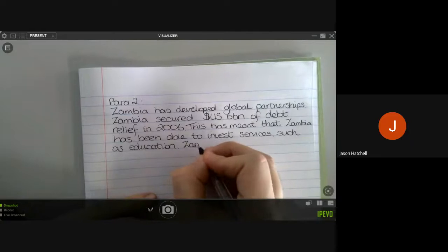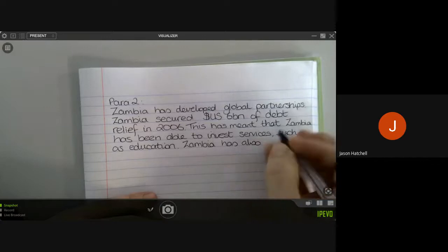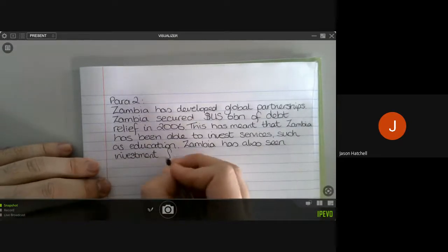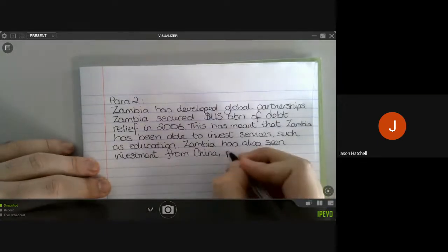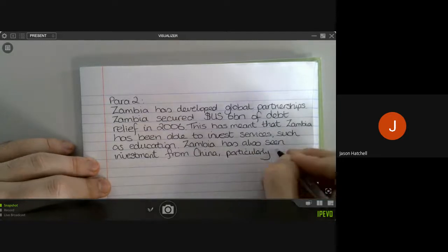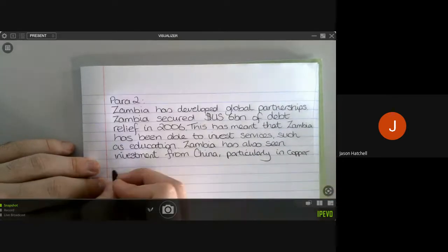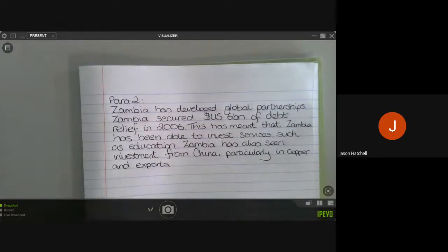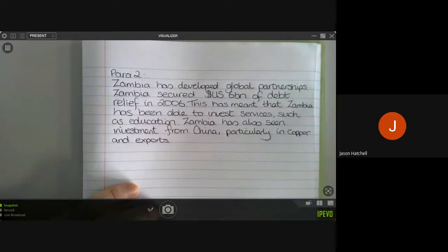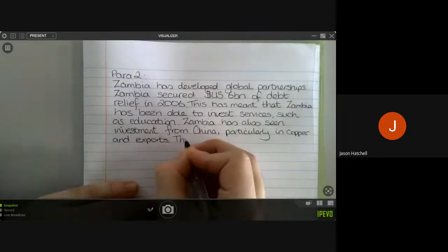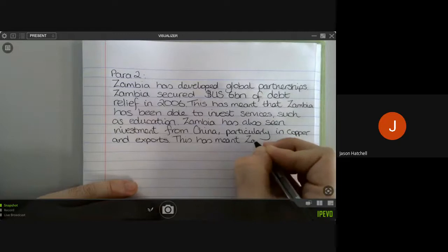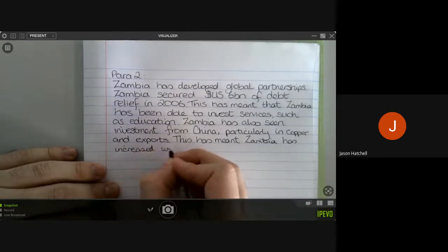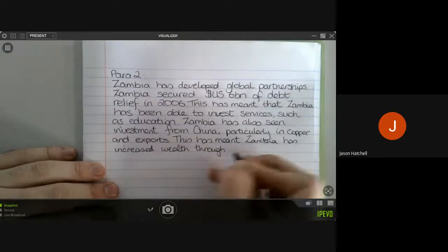We can also make the point here that Zambia has also seen investment from China, and we know that that is particularly in copper and exports. And we know, of course, exports and any investment from foreign nations is good for a nation because it allows the nation to develop some more trade links and also wealth. So we can say this has meant that Zambia has increased wealth through trade as well.